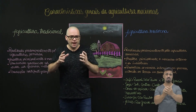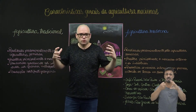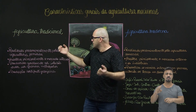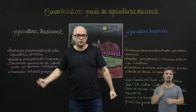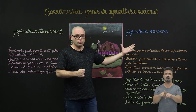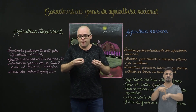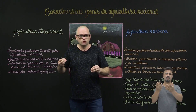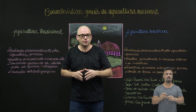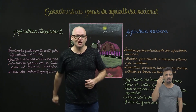Essa foi a aula sobre as características gerais da agricultura nacional, dividida basicamente na agricultura tradicional, pautada no abastecimento interno, e na agricultura moderna, pautada na exportação e abastecimento das indústrias. Espero que você tenha entendido e gostado. Muito obrigado por ter assistido até aqui. Tchau!